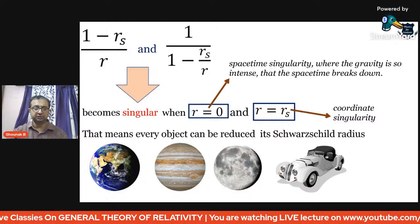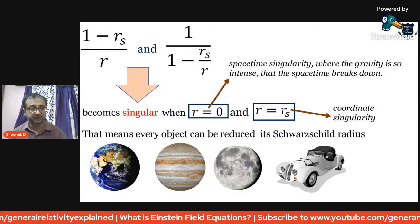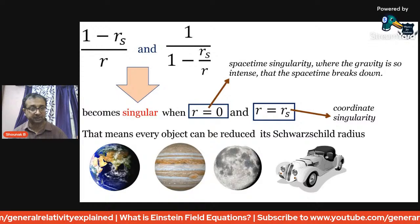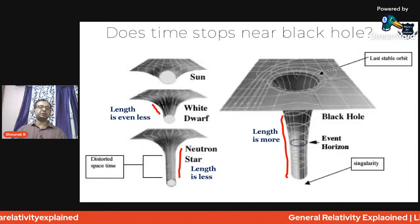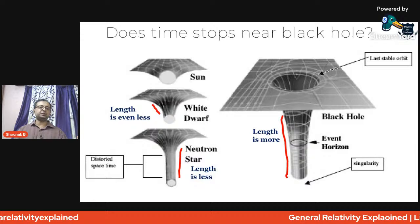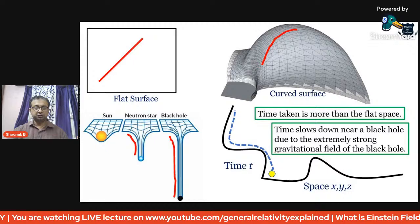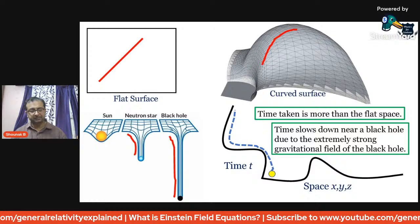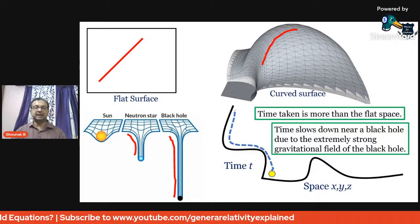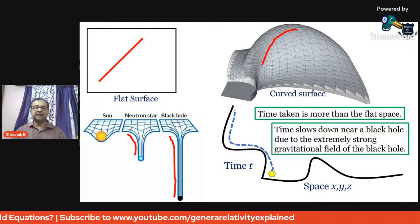When R equals zero, it is called a spacetime singularity where gravity is so intense that spacetime breaks down. When R approaches the Schwarzschild radius Rₛ, it is called a coordinate singularity. The evolution from the sun to white dwarf to neutron star to black hole shows increasing curvature each time. Taking time as a separate coordinate, more time passes due to the curvature as you travel deeper — which is why time appears to slow down.